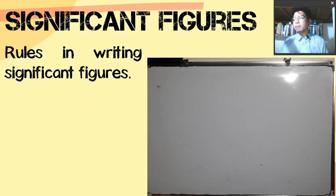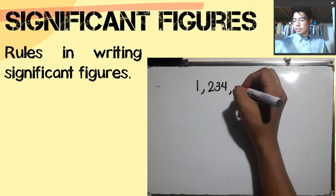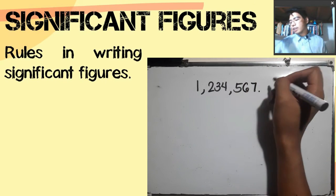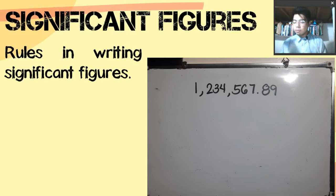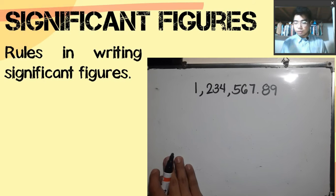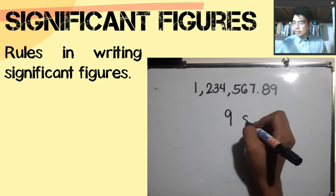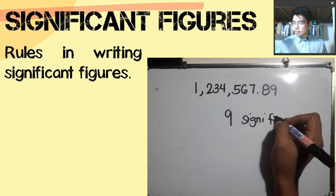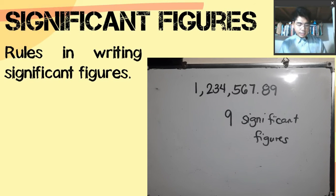Going back to our value 1,234,567.89 — how many significant figures are present? Following rule number 1: all non-zero numbers are significant. How many non-zero values are in this number? We have 1, 2, 3, 4, 5, 6, 7, 8, 9 — so there are 9 significant figures in this number. That is rule number 1.